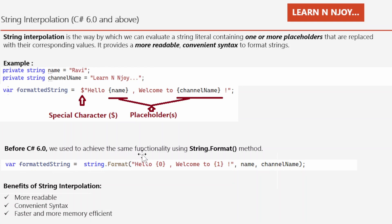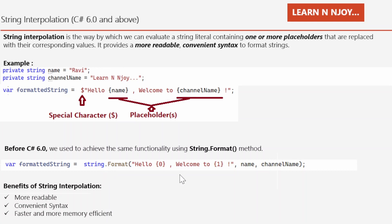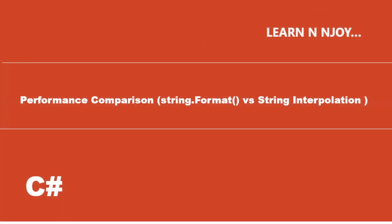Before C# 6.0, we used to achieve the same functionality using the string.Format method — for example, string.Format("Hello {0}, welcome to {1}!", name, channelName) — using positional placeholders 0 and 1, which get replaced with the name and channel name variables at runtime. This approach was not memory efficient, which is why the C# creators introduced string interpolation. The benefits are: it's more readable, offers convenient syntax, and above all it's faster and more memory efficient.